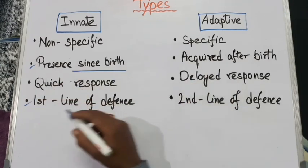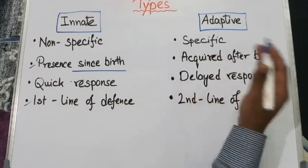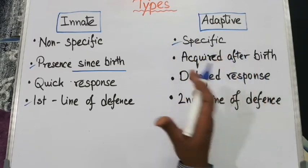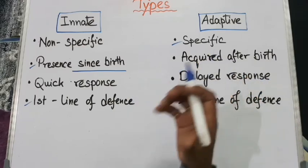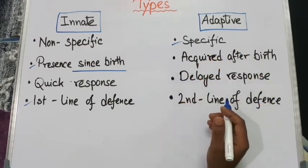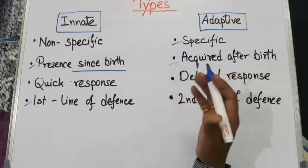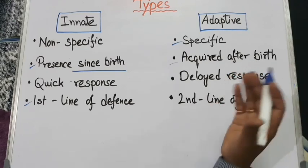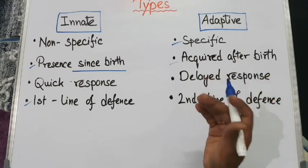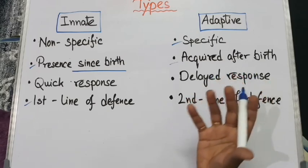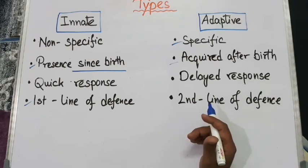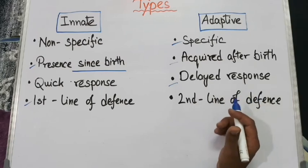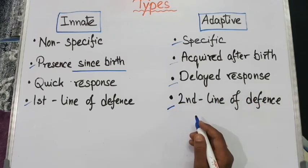Now let's discuss the characteristic features of the adaptive immune system. This type is highly specific — it can recognize different types of germs or pathogens and mount different immune reactions against them. It can only be acquired after birth, through direct exposure to disease-causing germs, pathogens, or antigens. It has a delayed response and acts as the second line of body defense.